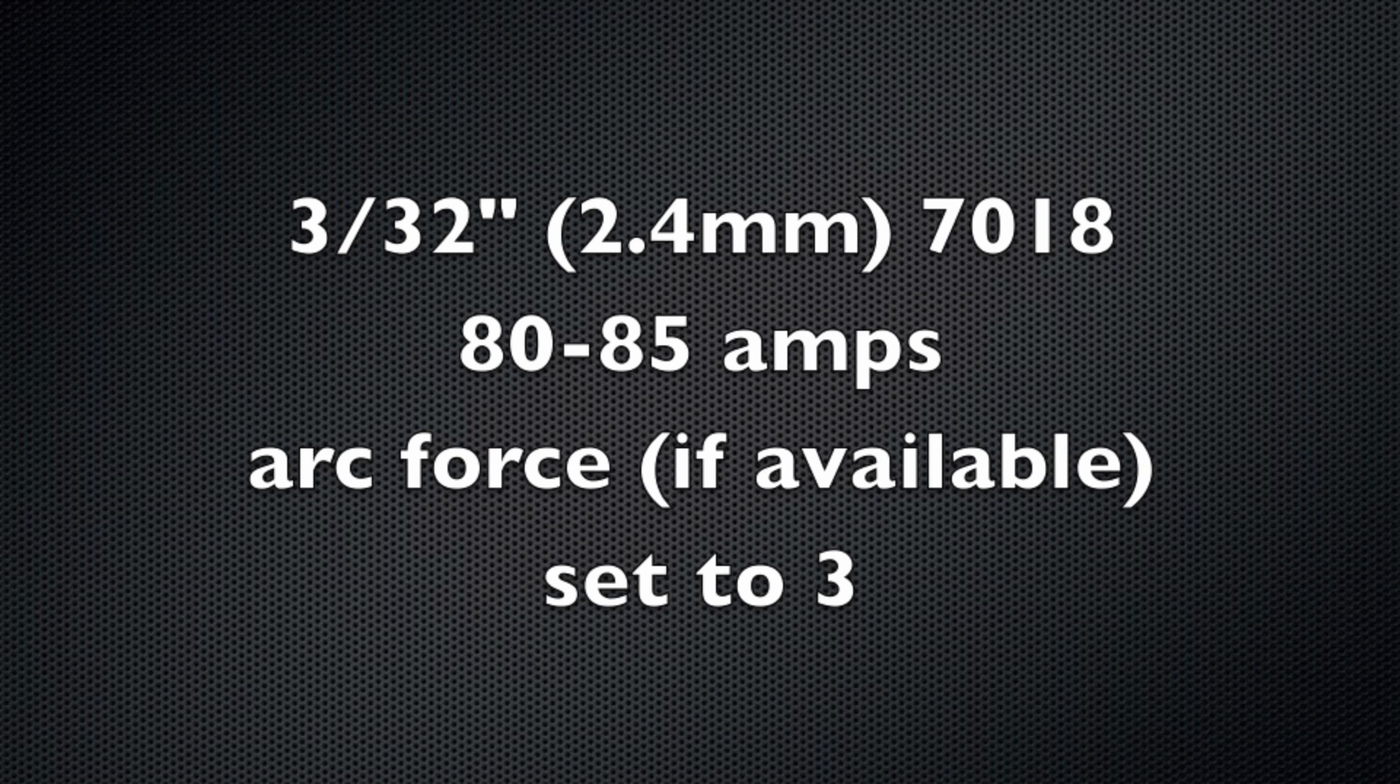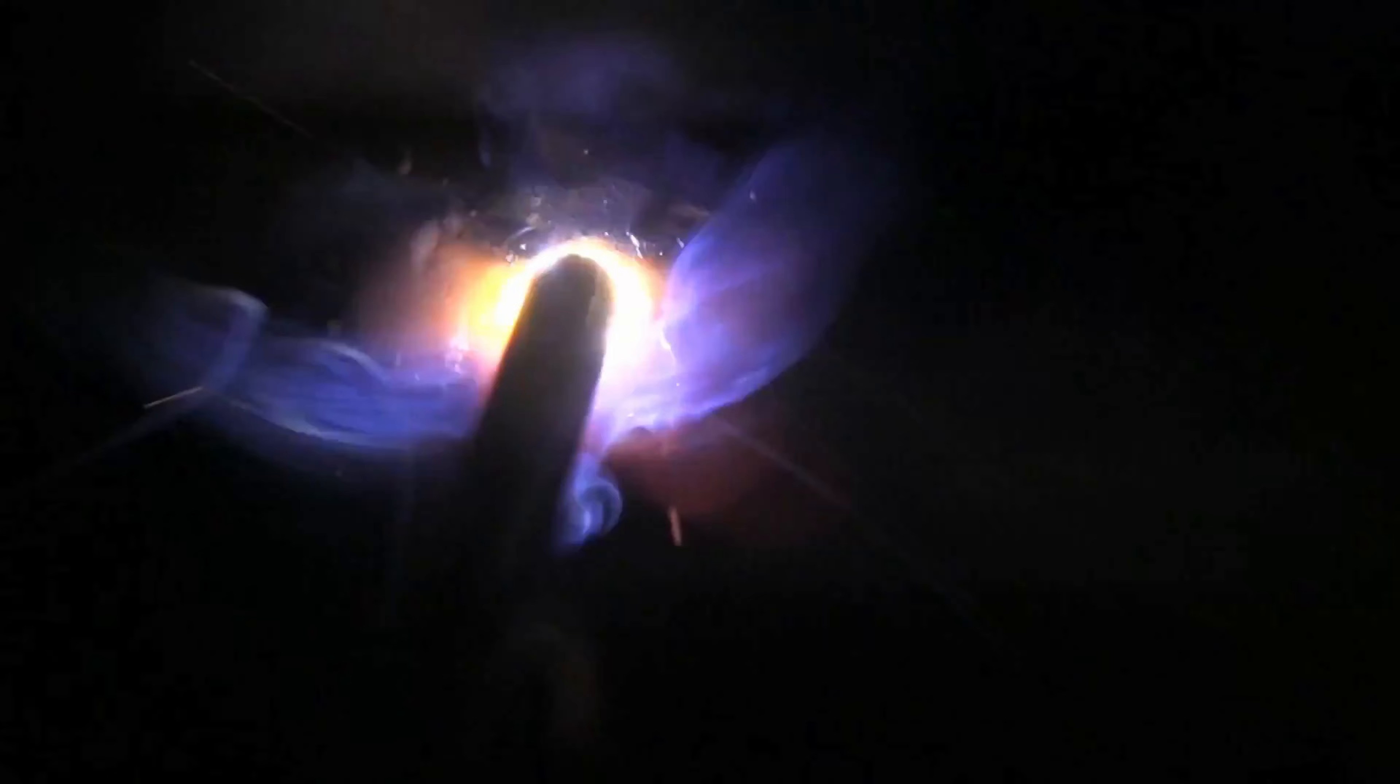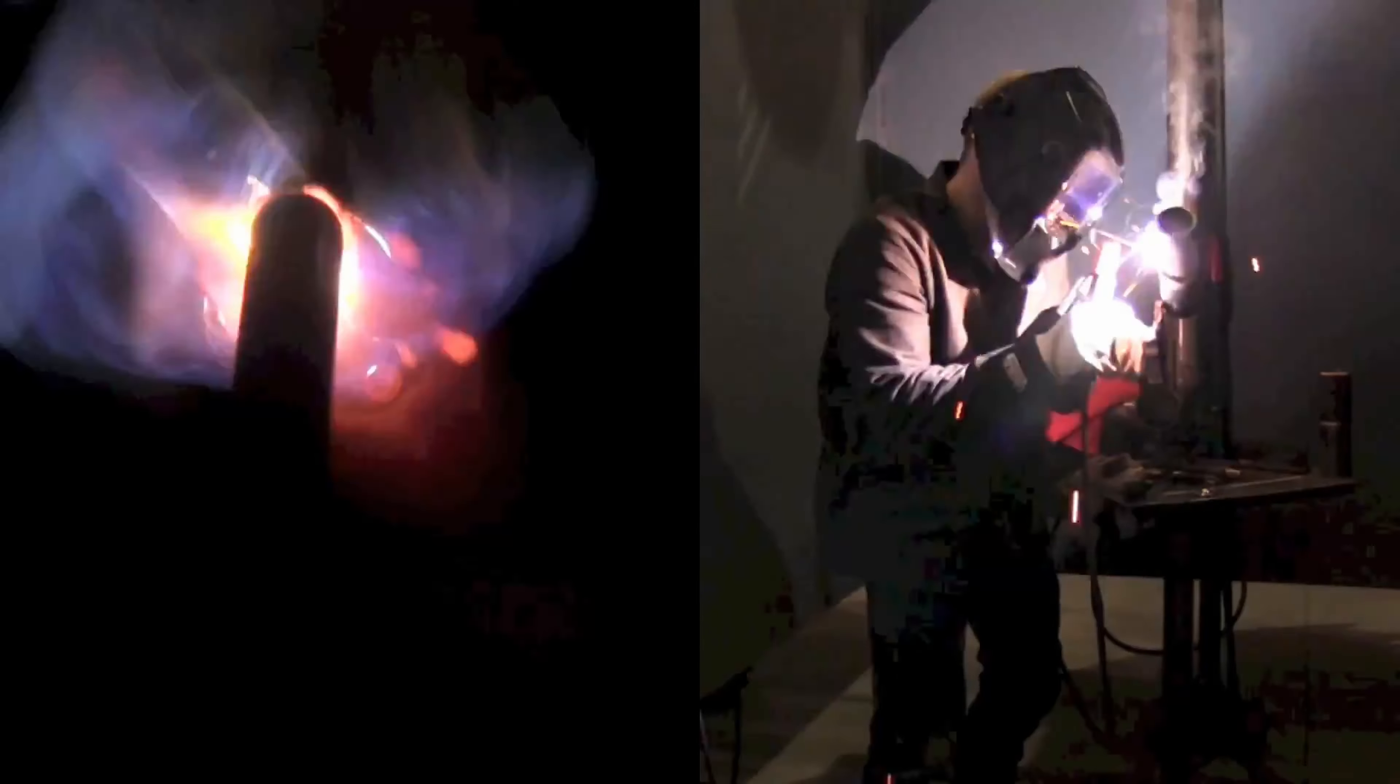We're getting ready to light up with the 7018 rod here. And this is where I failed my first test, actually the first real test that I ever took. Amps here, just a little bit of cushion. I got a fairly heavy root pass in there too and that makes a difference, so we're not really at risk here for blowing through.